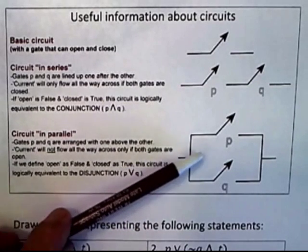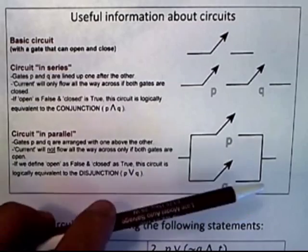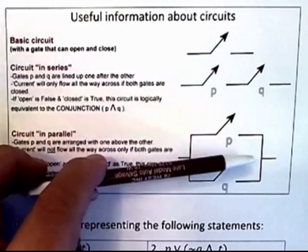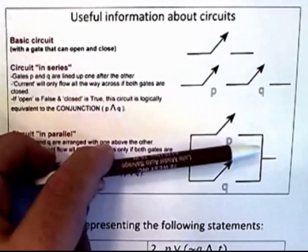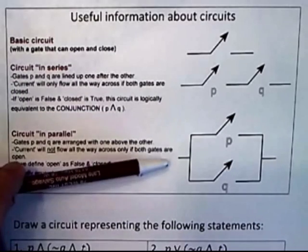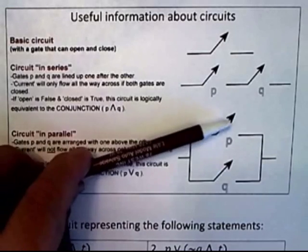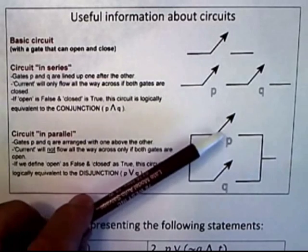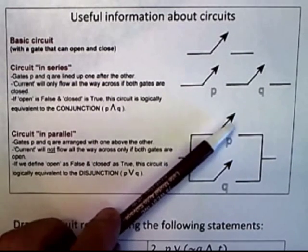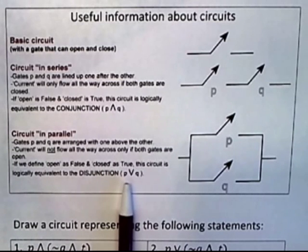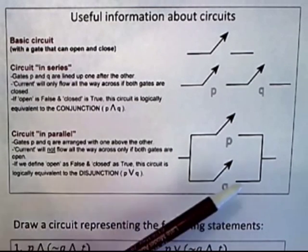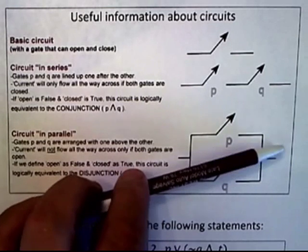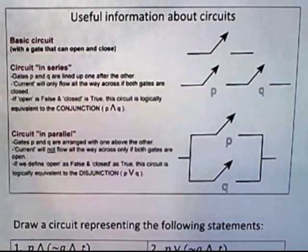With the OR statement, you could think of that as a parallel circuit, where the circuits are one on top of the other. If you think of that as a power source with a light bulb, it only has to have one gate closed in order for the light bulb to light up. The only way that the light bulb will not light up is if both gates are open. That's exactly equivalent to an OR statement, where an OR is only false if they're both false.